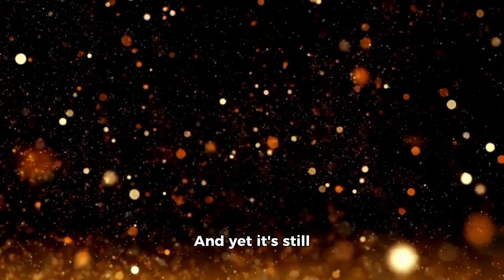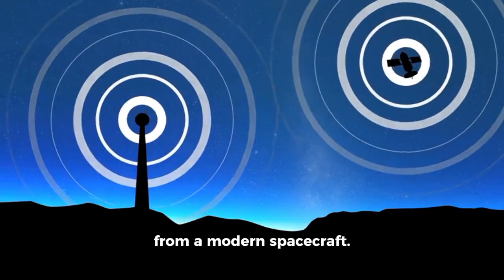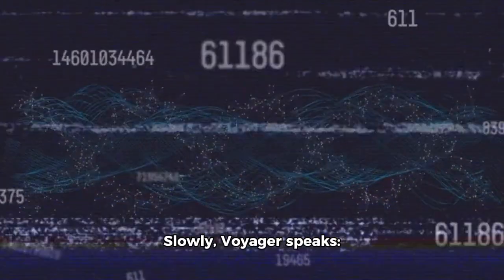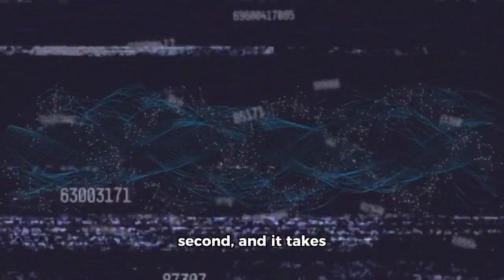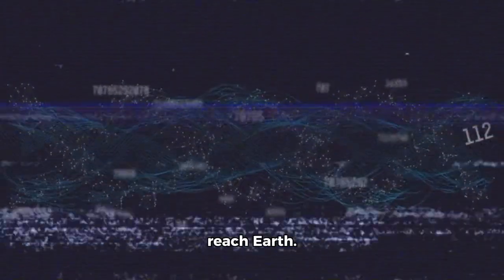And yet, it's still sending us messages. These aren't the kind of signals you might expect from a modern spacecraft. Slowly, Voyager speaks at just 160 bits per second, and it takes over 22 hours for a single transmission to reach Earth.